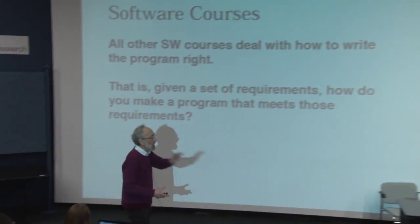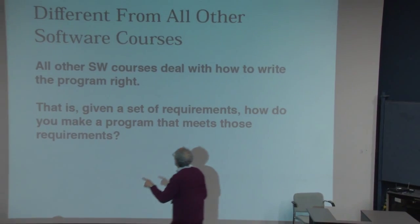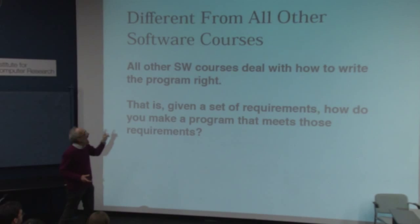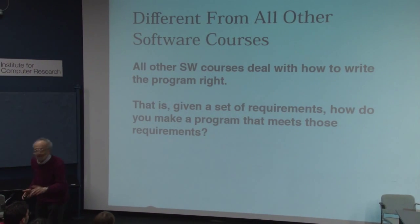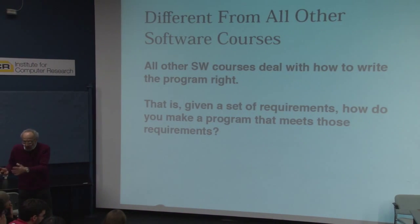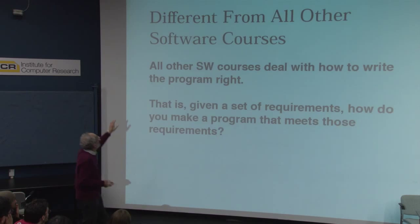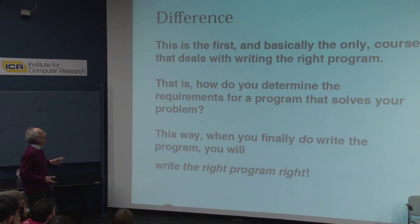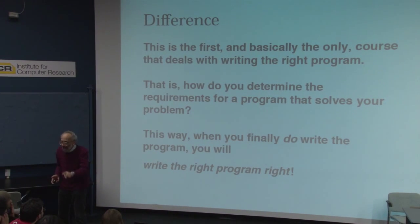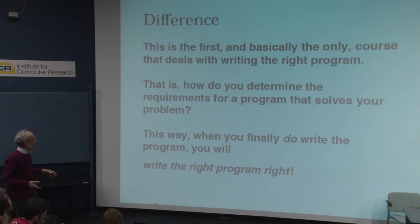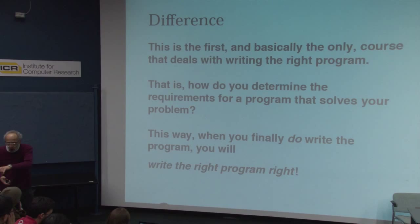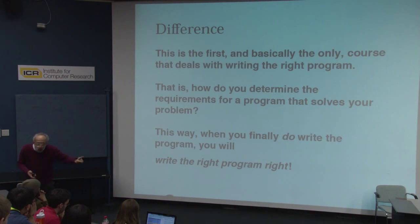This course is different from any other course about software that you have or will take. All other courses deal with how to write the program right — that is, given a set of requirements, how do you make a program that meets those requirements? This course is the first and basically the only course that deals with writing the right program. That is, how do you determine the requirements for a program that solves your problem? After this course combined with the others, when you finally write the program, you will be writing the right program right.